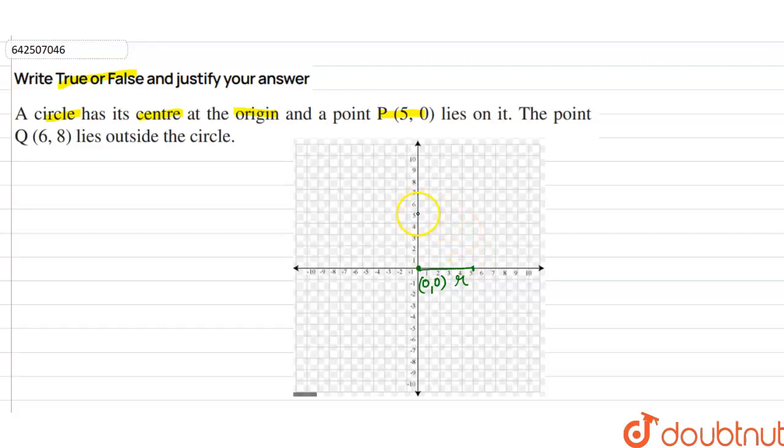So at every point, the distance from origin to the point will be equal to 5 units. So firstly from this, we draw a circle by joining the points. So this is minus 5.